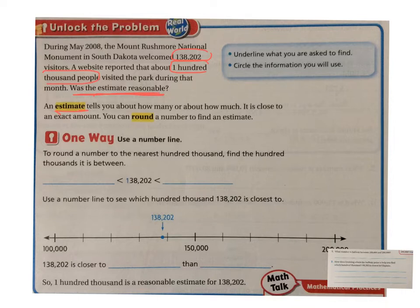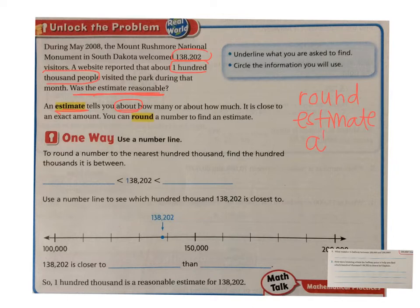The book reminds us that an estimate tells you about how many or how much. It is close to an exact amount — it's not the exact number, but it's close. So when we see the words round, estimate, or about, we know that we're not talking about the exact amount. We're talking about a number that's easier to think about in our heads that is close to the real amount.